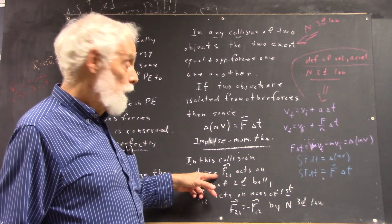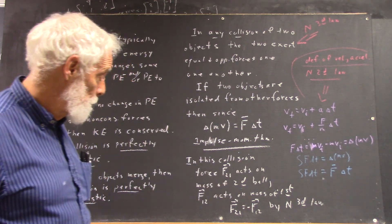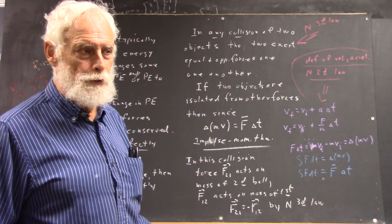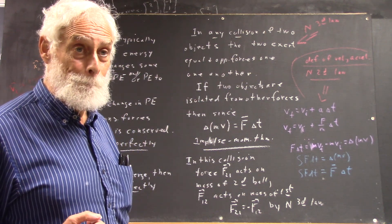Don't even try to memorize the convention until we make sure we have it right. And F1-2, of course, is the force exerted on ball 1 by ball 2, right?